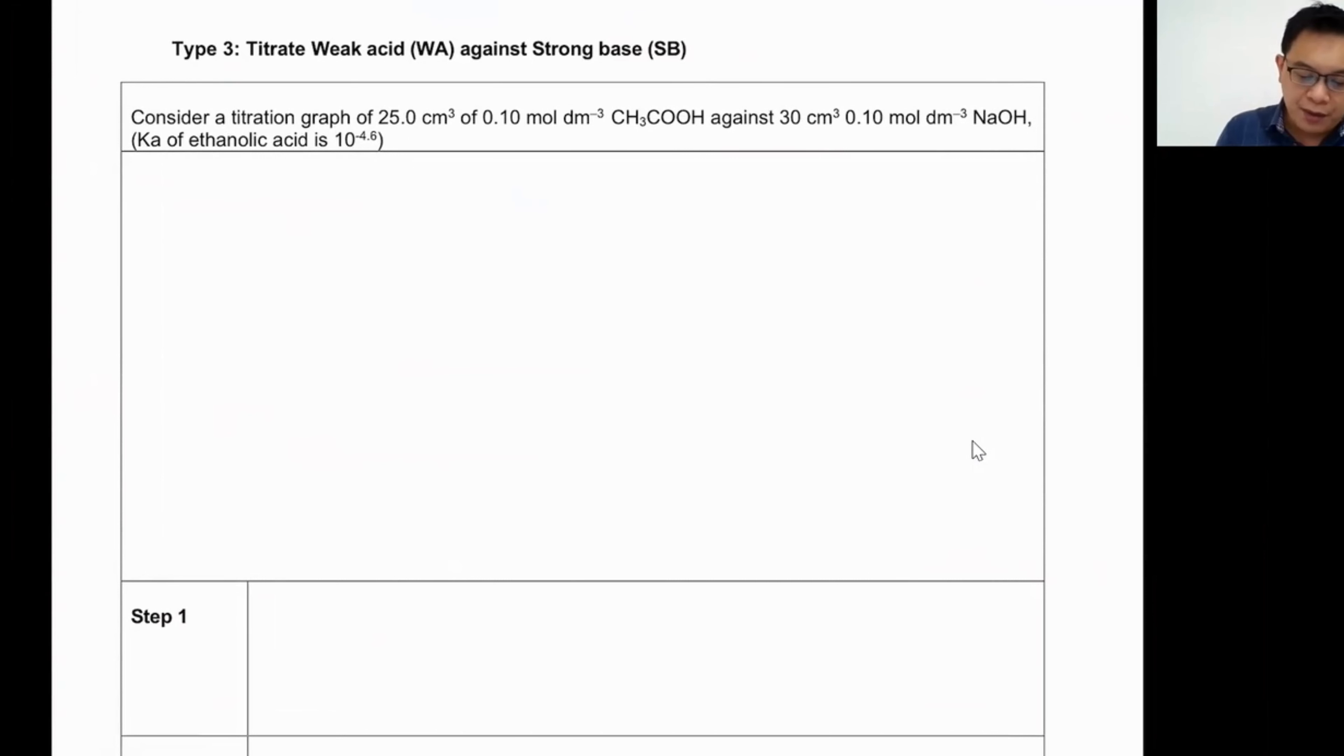Titrate weak acid against strong base. Now whenever the first compound is being mentioned, like in this case ethanoic acid, we're going to say consider a titration of 25 cubic cm of 0.1 mole per dm³ of ethanoic acid. This will be in the conical flask against 30 cubic cm of 0.1 mole per dm³.